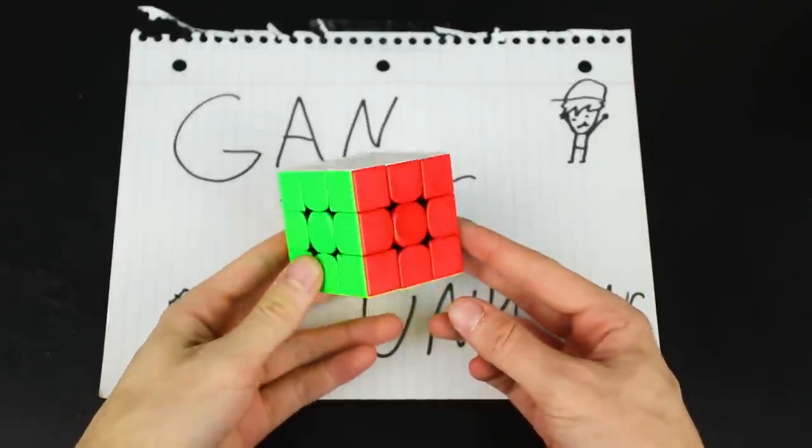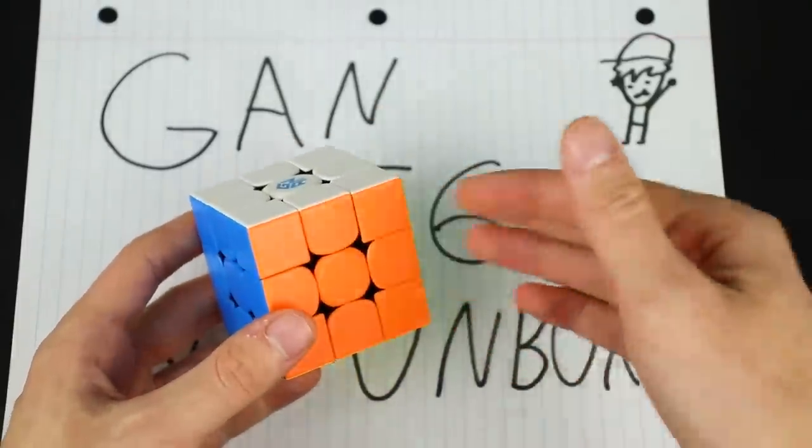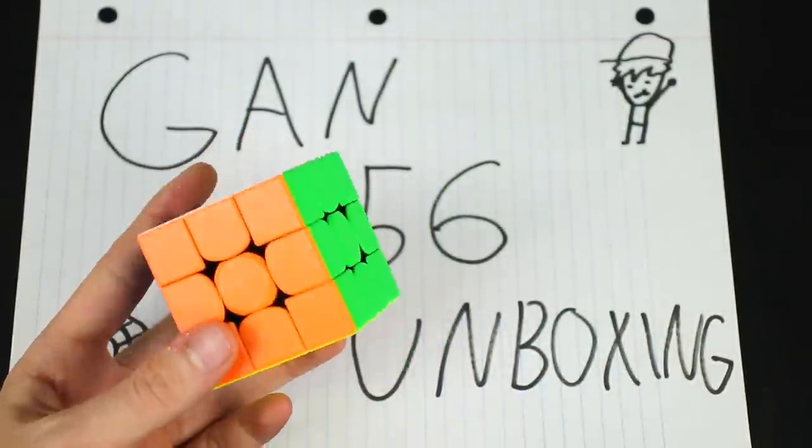Bam. Okay, great. So here is the GAN 356. I'm going to zoom up on this a little. So it's got the nice frosted tiles with the black internals. I definitely like that look. It's one of the greats.